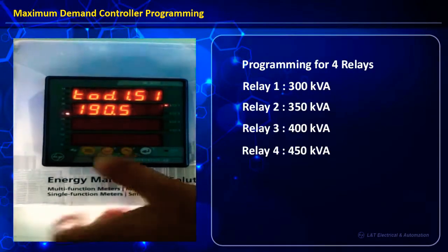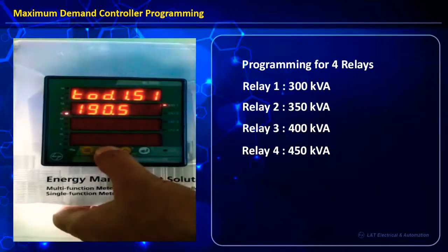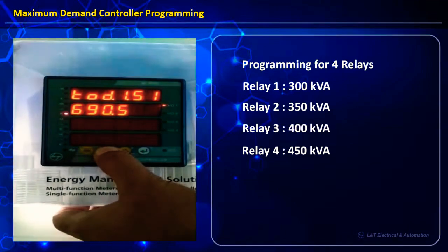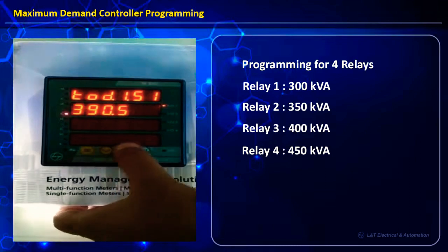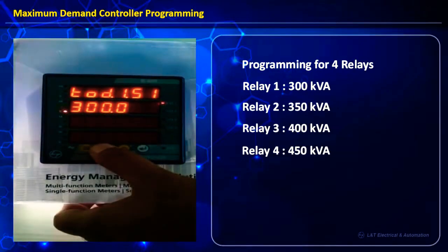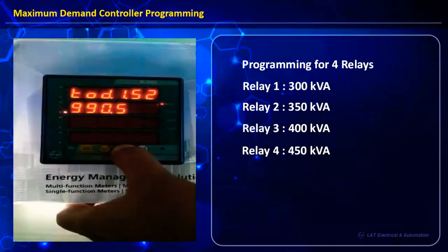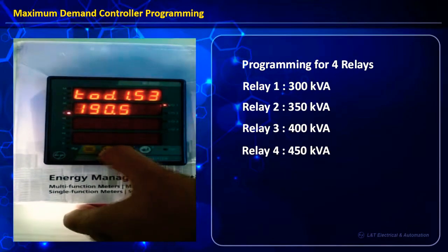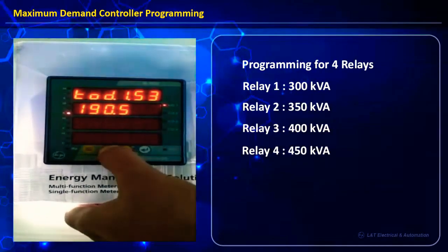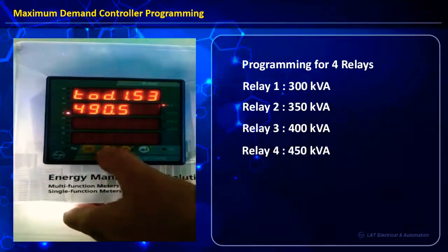TOD1-S1: relay 1 is programmed for 300 kVA, so we modify it to 300.0 while ensuring the K indicator is on. Next we move to TOD1 slot 2 for 350 kVA. Then TOD1-S3 for 400 kVA, and relay 4 will be set for 450 kVA.